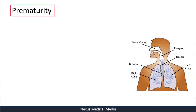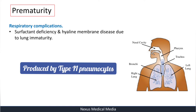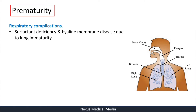Respiratory complications include surfactant deficiency and hyaline membrane disease, due to lung immaturity. Surfactant is a substance that reduces surface tension, preventing the alveoli from collapsing. It is first synthesized between 24 to 28 weeks, and in most babies is sufficient by 35 weeks for life outside the uterus.